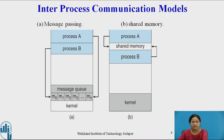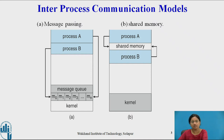As shown in this figure, in the message passing system, processes communicate using information exchange — process A and B can communicate just by exchanging information. In shared memory, process A and B communicate using a shared memory region. This shared memory region is established at the beginning, and then processes communicate without kernel intervention. Shared memory is faster than message passing because message passing is implemented using system calls, which must be executed each time.